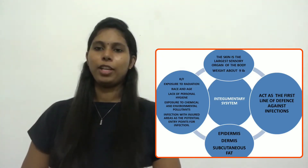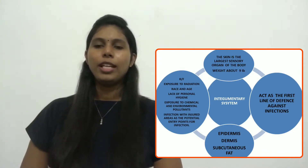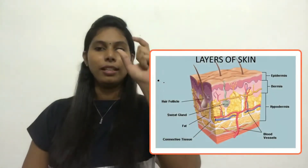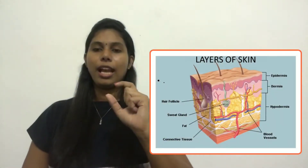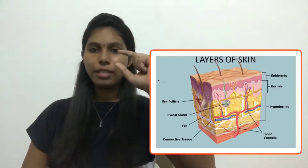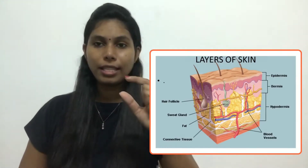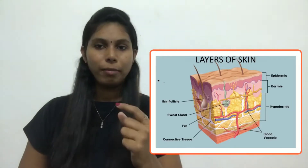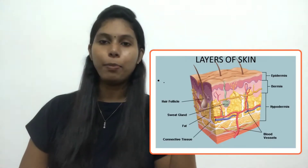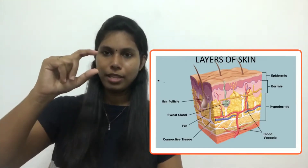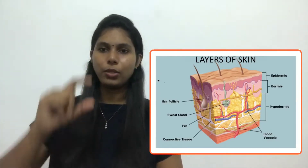Skin also helps maintain normal body temperature. These are some of the functions that come under the physiology of the integumentary system. Now we will see how the skin is divided based on its layers. The first layer is the epidermis, the second is the dermis, and the third is the subcutaneous layer, also called the hypodermis, which is adipose tissue.